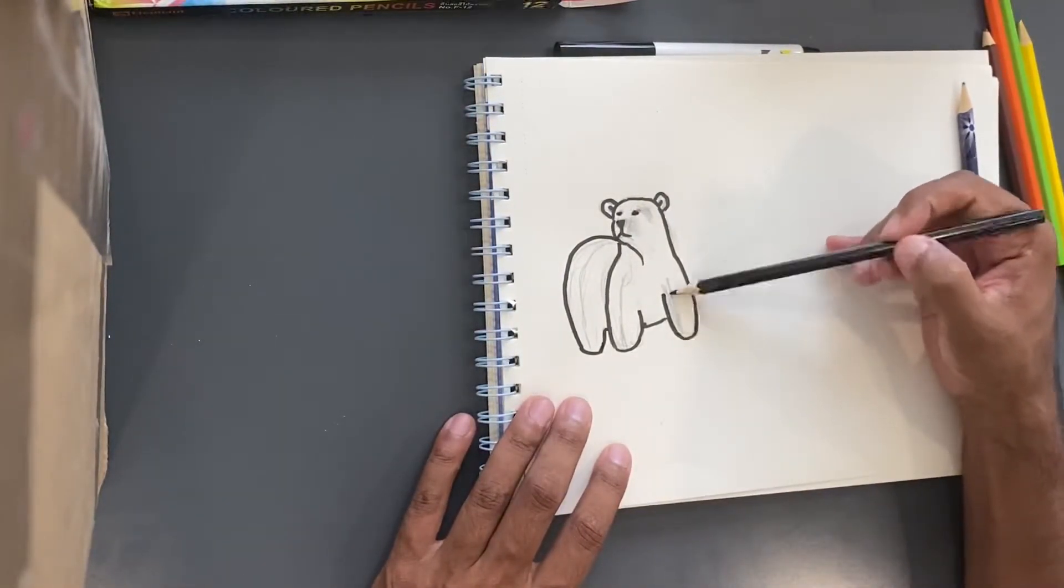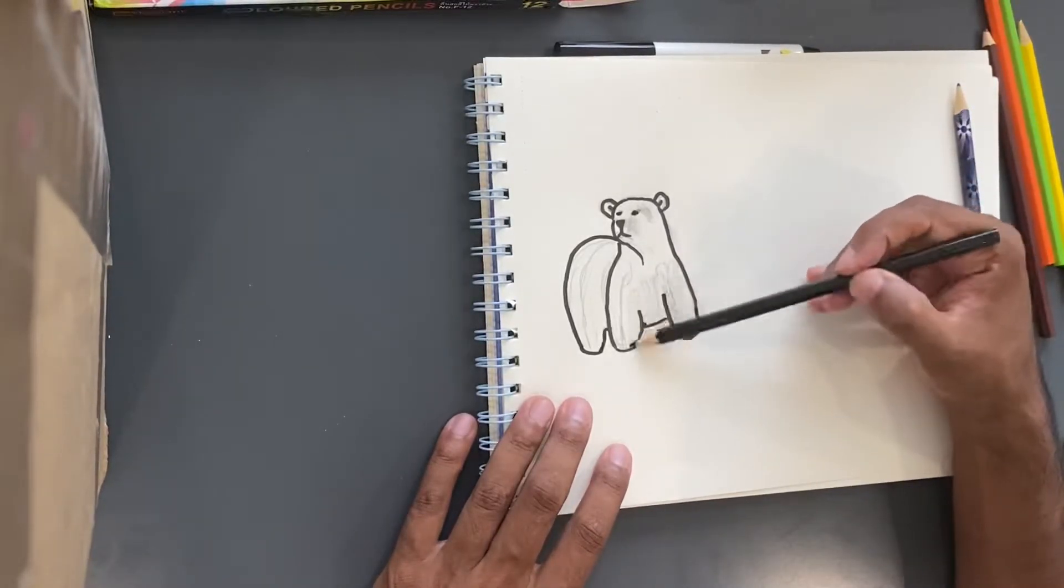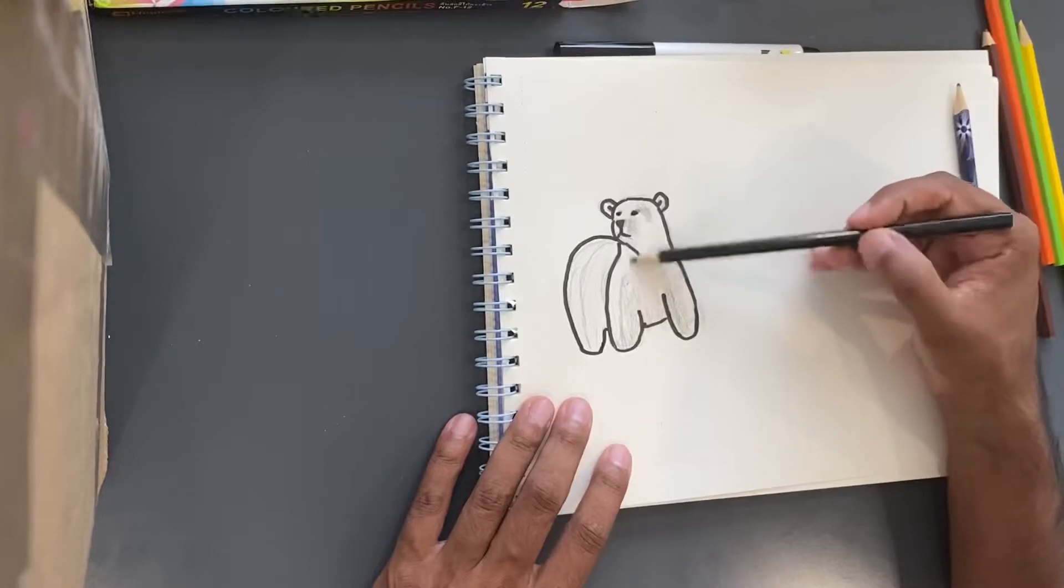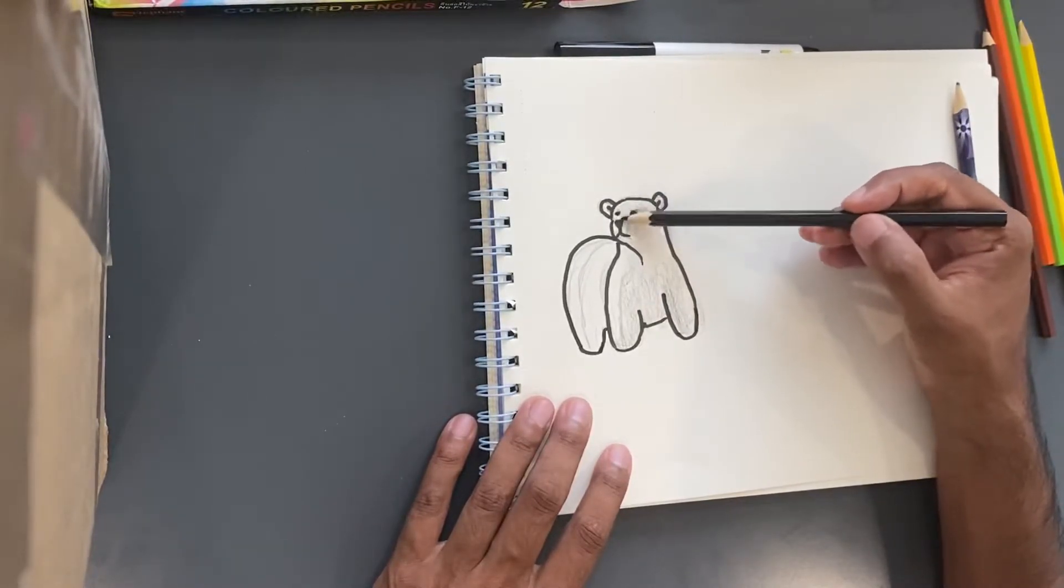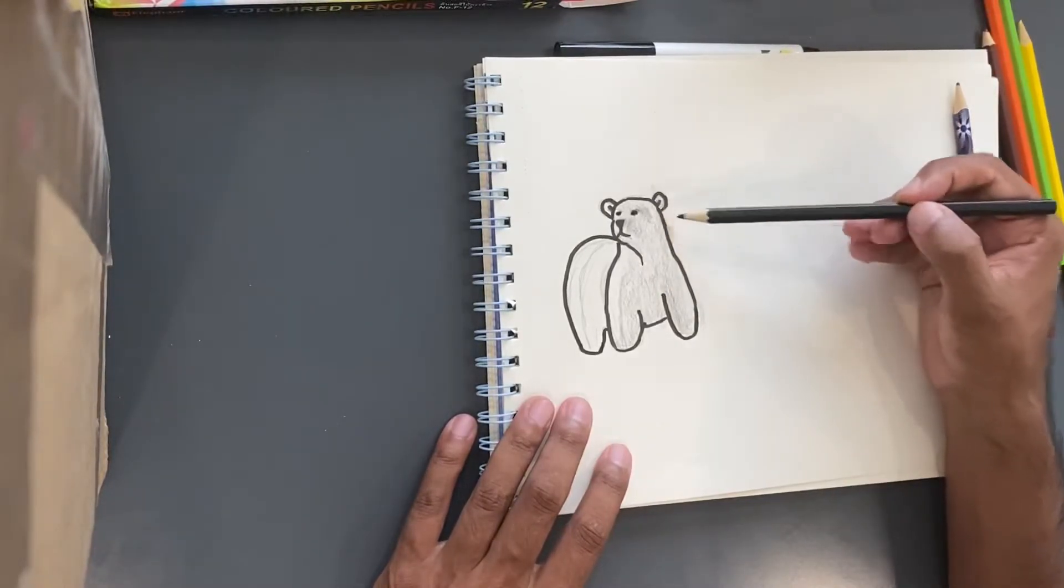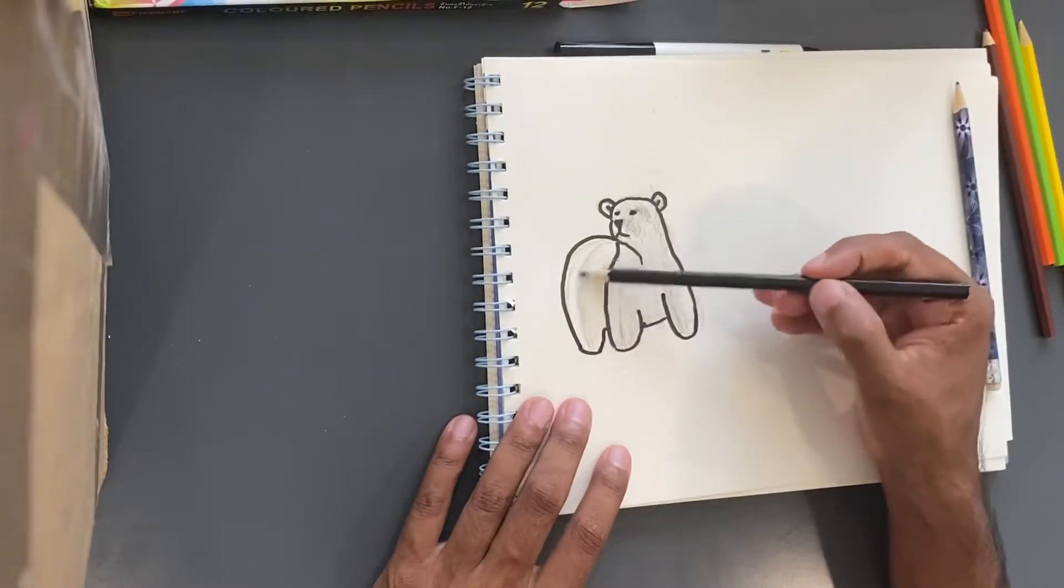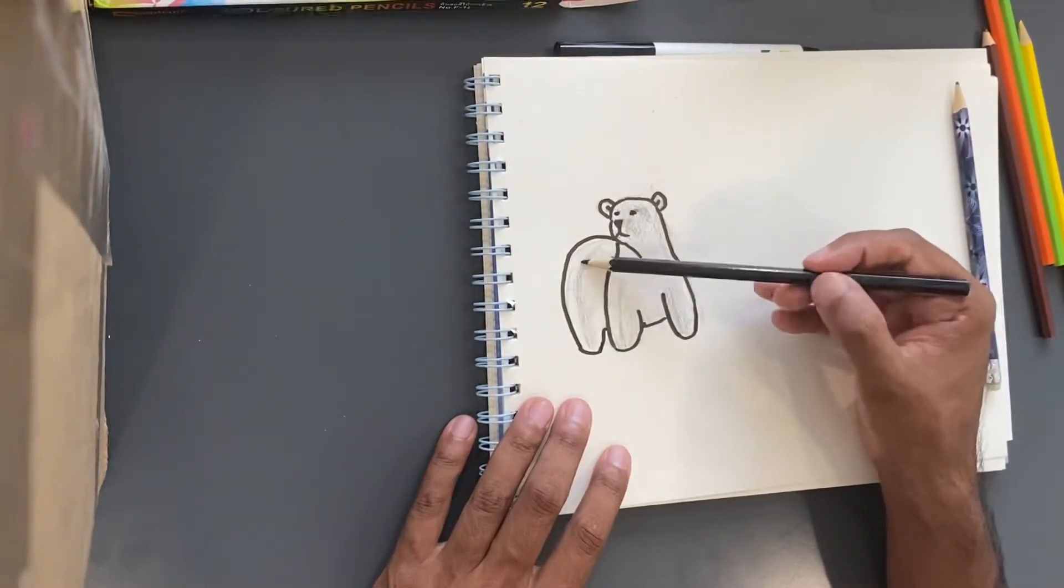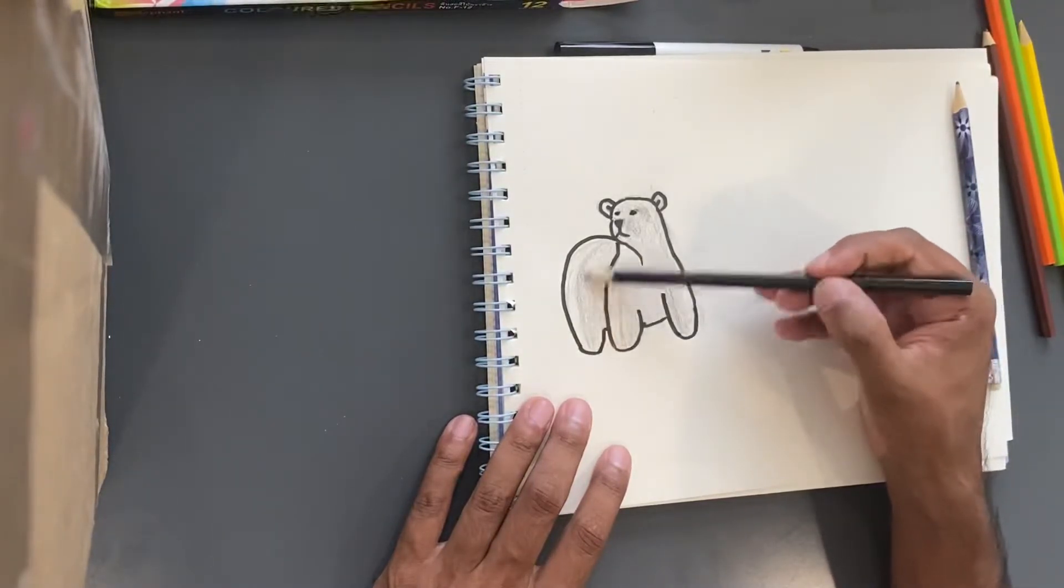So let's just add some gray. These polar bears, you know, they're white, but they also have a lot of contrast and shadow. So there's some shadow on this side, and we'll just give some more shadow over here. And you go just like that.